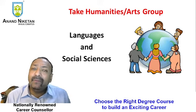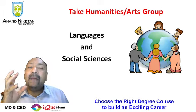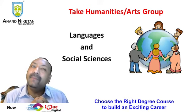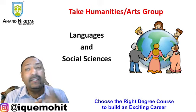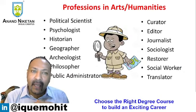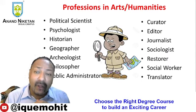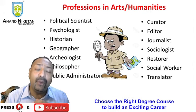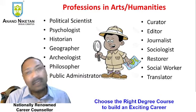Next, Arts and Humanities. If at 10th level you are very strong in social sciences and languages — both together — then arts or humanities could be the right option for you. After arts and humanities you can become a political scientist, psychologist, historian, geographer, archaeologist, philosopher, public administrator, curator, editor, journalist, sociologist, restorer, social worker, or translator.